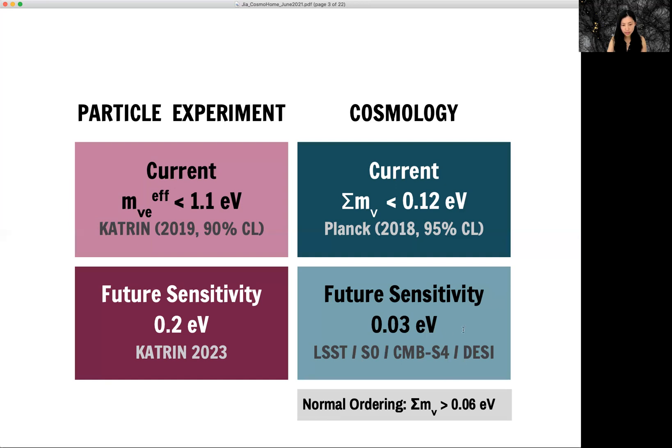So that means in the next 10 years, we're likely to have very good hint of neutrino mass, or we might even discover the neutrino mass.